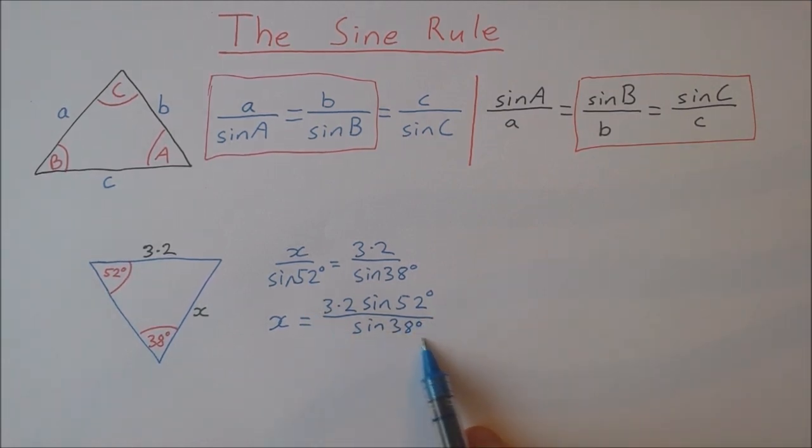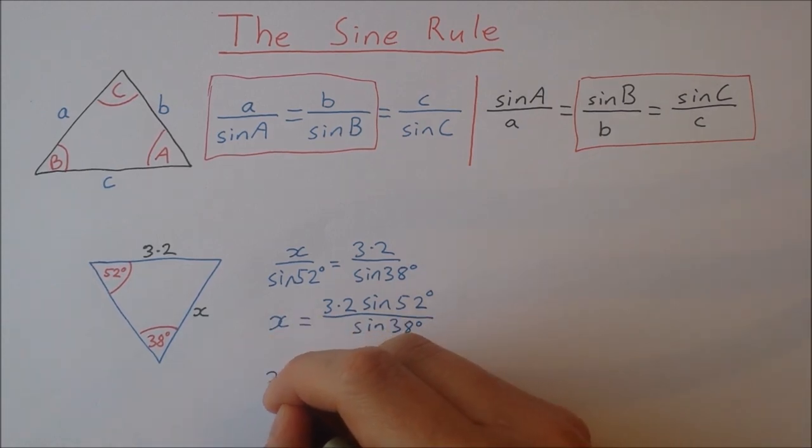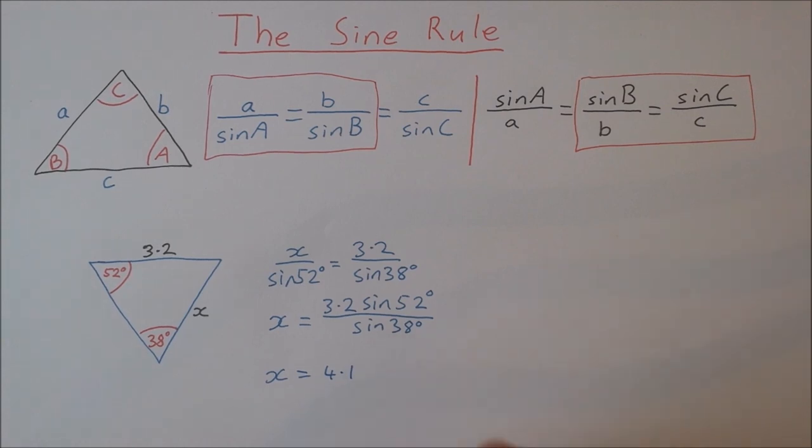And now I can put that there straight into the calculator. So when you put that into your calculator you get x is equal to 4.1. That's correct to one decimal place.